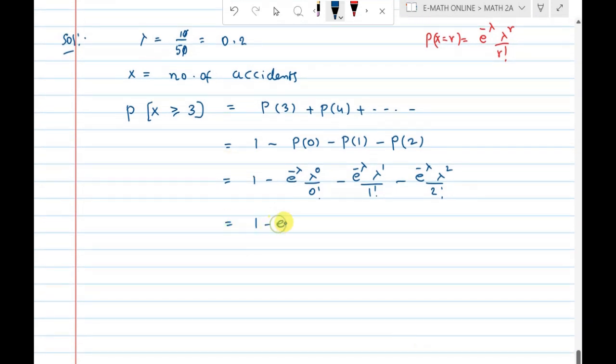That equals e power minus lambda times lambda power 0 which is 1 by 0 factorial which is 1, minus lambda power 1 which is lambda by 1 factorial which is 1, minus e power minus lambda lambda square by 2 factorial.